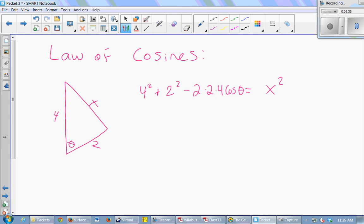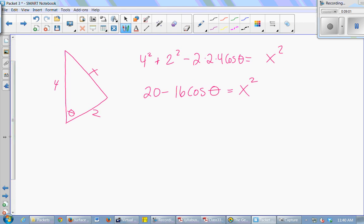So now I have an equation that relates my two important variables, theta and x. The variable I know something about and the variable I want to know something about. So if I simplify this, I get 20 - 16cos(theta) = x². Okay, good. So I've got my variables related to each other. I'm going to take d/dt of both sides to introduce my rates.